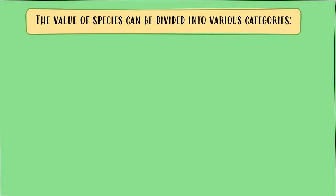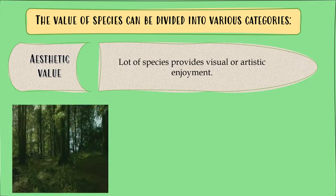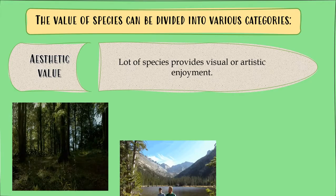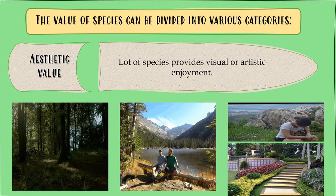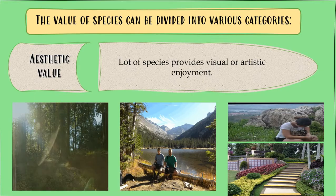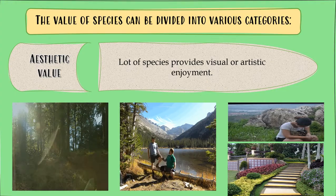And for the last one, we have aesthetic value. Lots of species provide visual or artistic enjoyment. Examples include forested landscapes, natural parks, or prayer mountains used as places for spiritual meditation. Those are the various categories of the value of species.